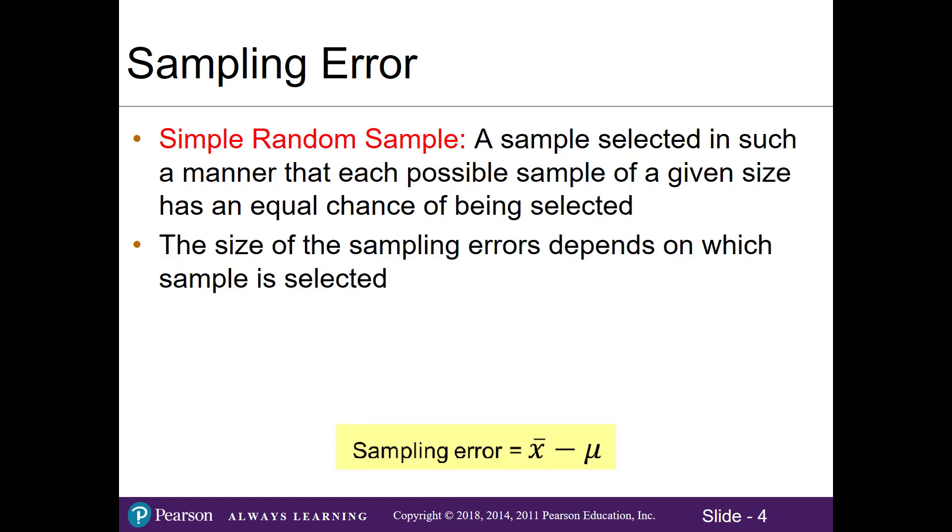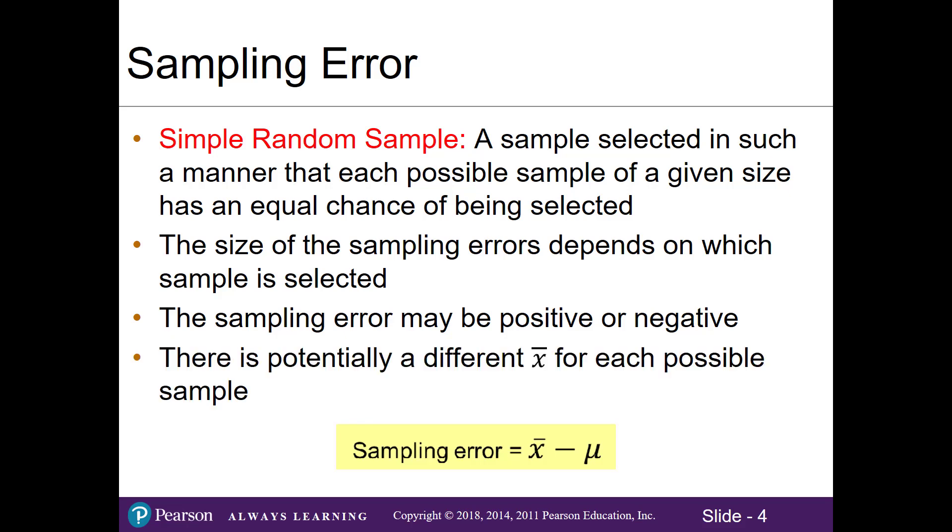The size of the sampling error depends on which sample is selected. If I'm randomly pulling a sample and I coincidentally pick all very large numbers, or I pick a sample with all very small numbers, or another sample where I'm lucky and get a mix of numbers, we'll get different sampling errors. The sampling error could be positive or negative, and there's a chance that you could get a different sample mean for each possible sample.